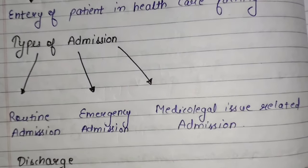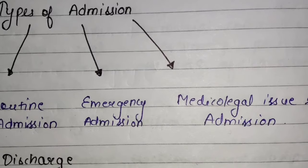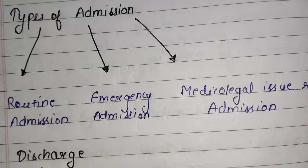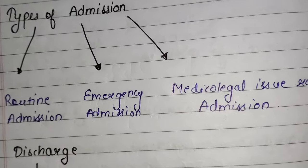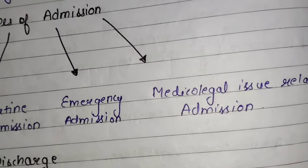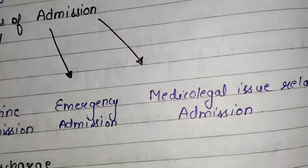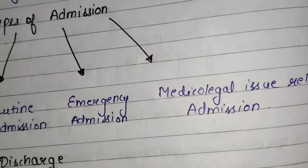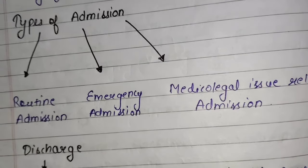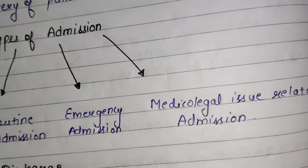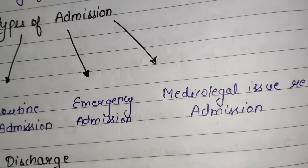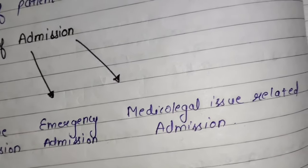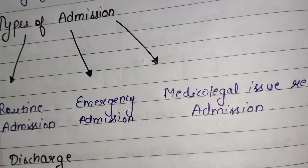Next, we will study about types of admission. First is routine admission, second one is emergency admission, and third one is medical legal issue related admission. Routine admission pahle se hi planned hotta hai. Ismein patient ko admit kiya jata hai for investigation, and treatment diya jata hai according to their problem — jaise patient with hypertension, diabetes — inko inke problem ke according treatment diya jaata hai.